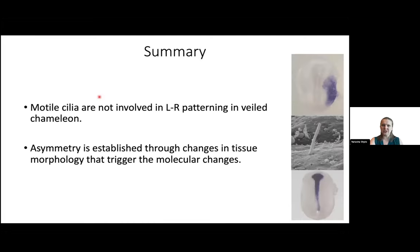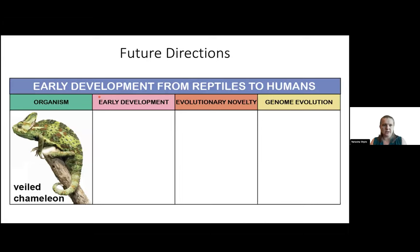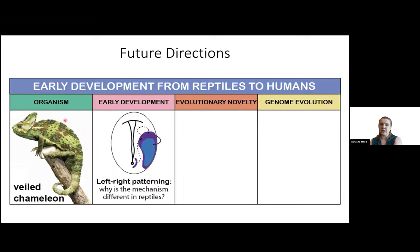So there are really two takeaway points from this presentation. First, motile cilia are not involved in left-right patterning in veiled chameleons. Second, asymmetry is established through changes in tissue morphology that then trigger these molecular changes. I'm eager to find out why this mechanism is so different in reptiles compared to, say, mice or zebrafish, and there are many other questions we can be answering as well.